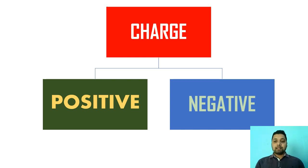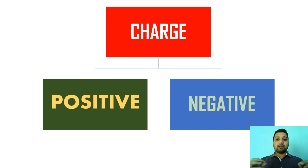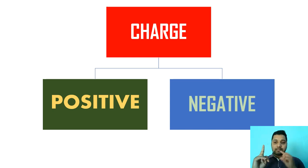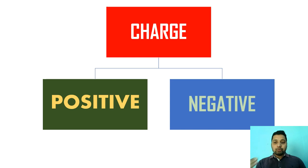Whenever this charge is able to flow with the help of conducting wires, that is called current electricity. But whenever the charge is stationary — the charge is at rest and is not able to flow — that is called static electricity. So there are two types of electricity: one where charge flows, that is current electricity, and one where charge is stationary and you only experience the charge, that is static electricity. In this video, we are going to discuss about current electricity where charge flows.